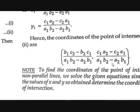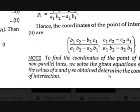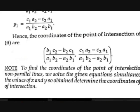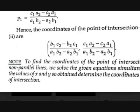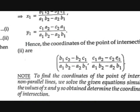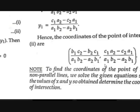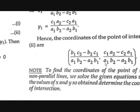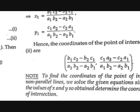These are the coordinates of the point of intersection. It seems difficult to remember, but you should remember this. To find the coordinates of the point of intersection of non-parallel lines, we can solve the given equations simultaneously for X and Y. That is not the only way — you can also solve normally by reducing coefficients. Let's see how to solve that in an example.